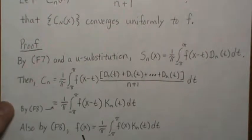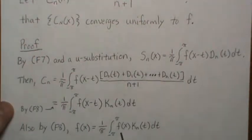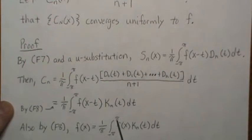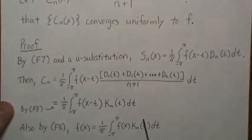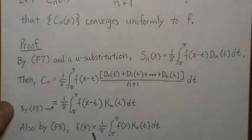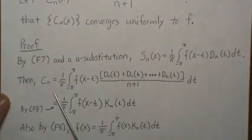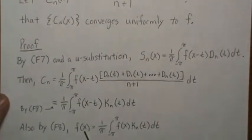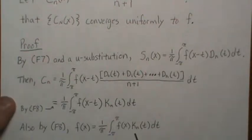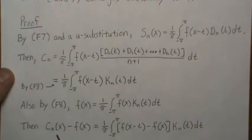Since we're in the t-world, we can factor f(x) out front, and what remains integrates to one — so we're essentially multiplying f(x) by one, but doing it in a way that lets us combine Cn and f(x), since they look very similar.